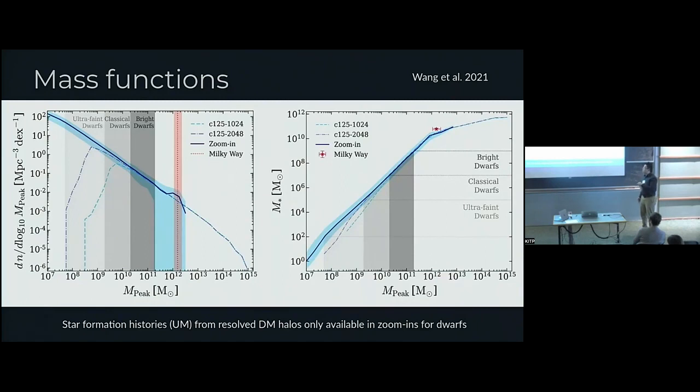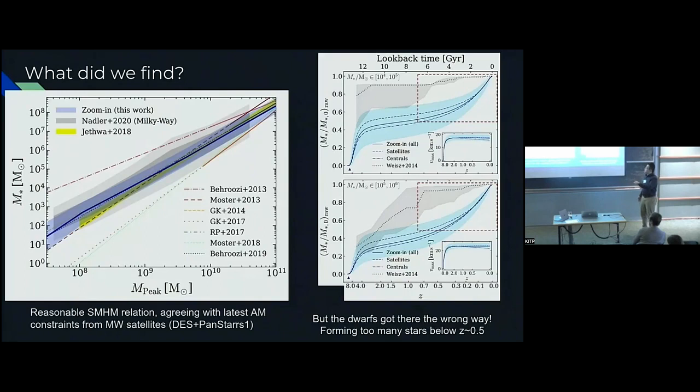If we compare the stellar mass halo mass relation to Ethan Nadler's work that we just mentioned from DES and Pan-STARRS, that's state of the art observational constraint based on Milky Way satellites. It's a pretty good match with the latest observational constraints. But we want to ask, did things get here in the right way? And it turns out that they didn't.